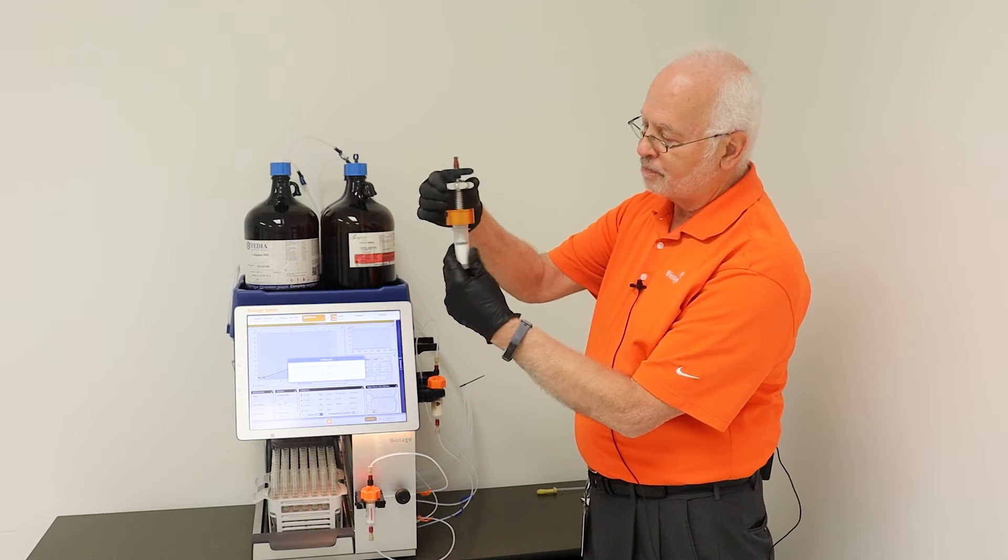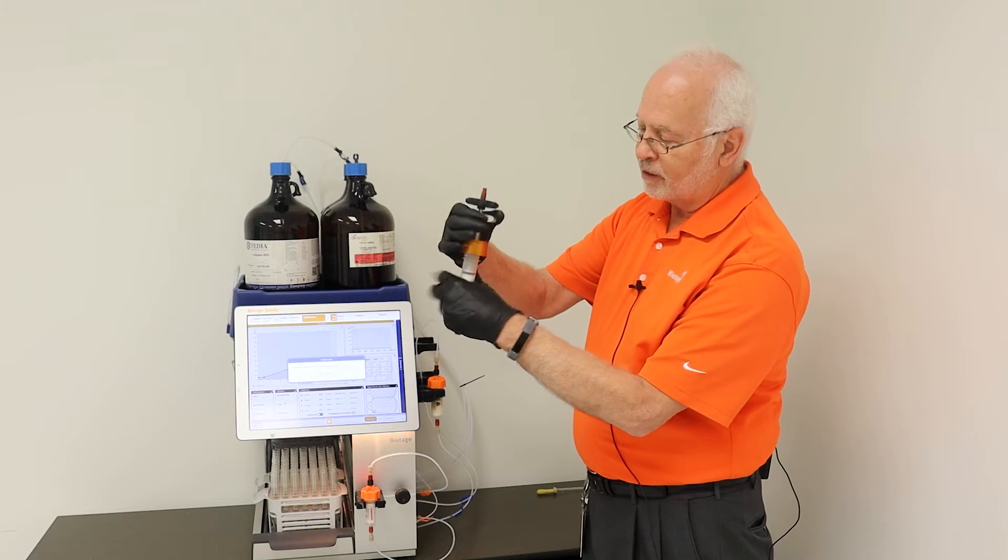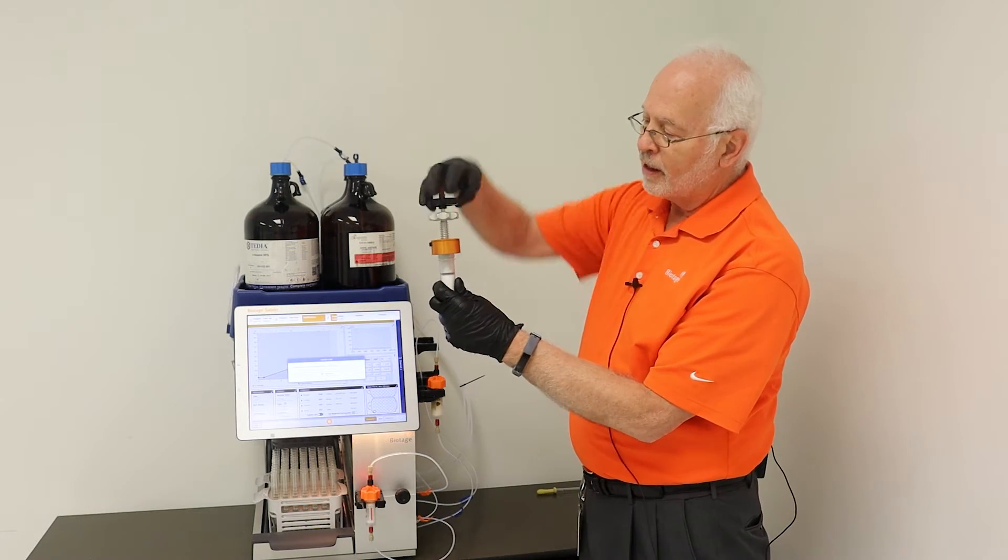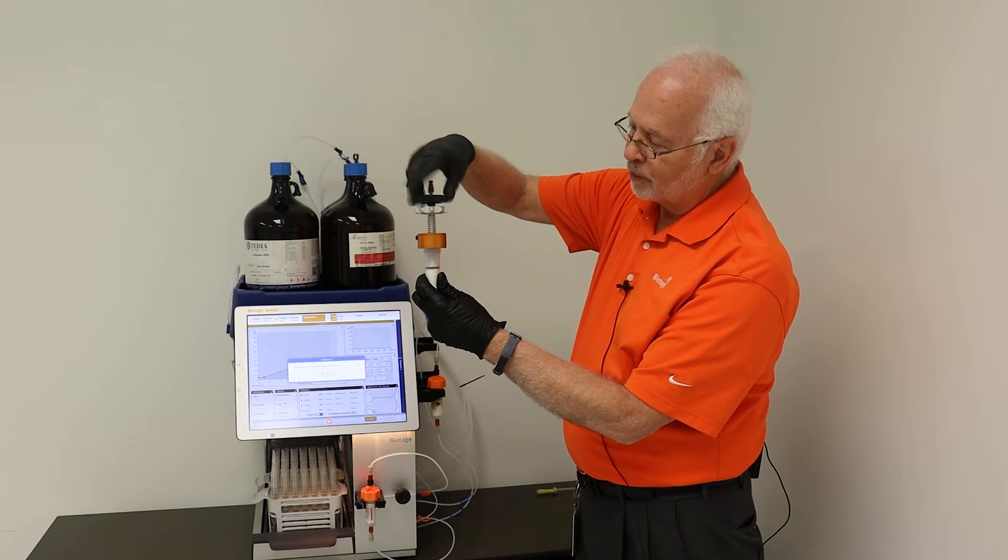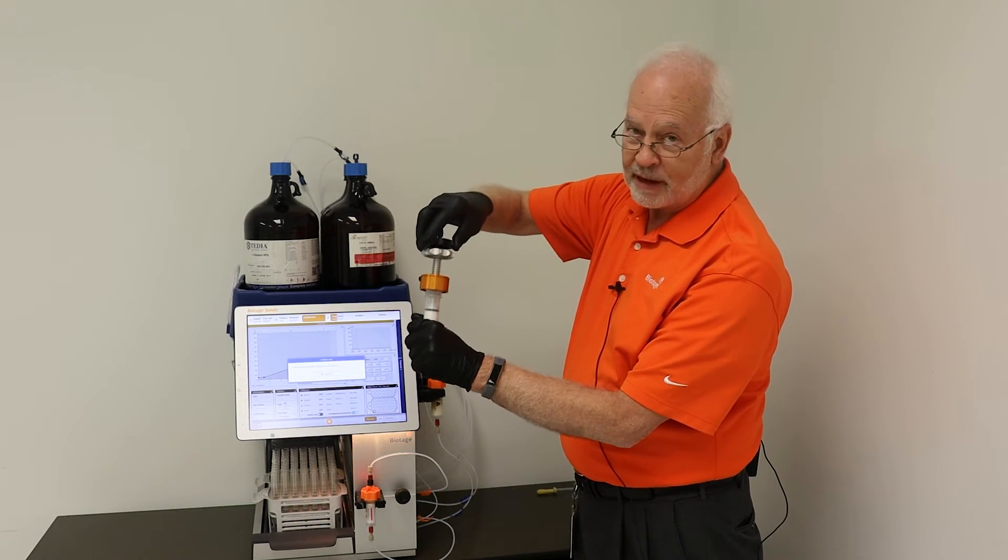You then tighten the piston so that it's snug against the top of the bed and then you can tighten the O-ring with the black knob and that's going to make a liquid seal.